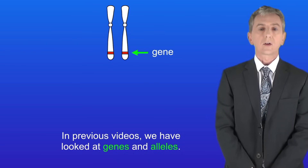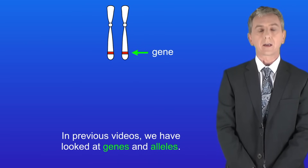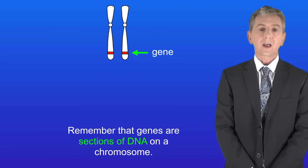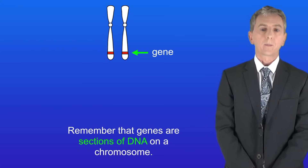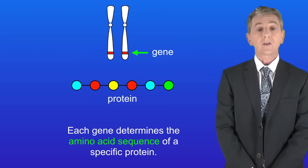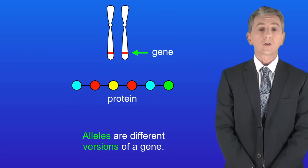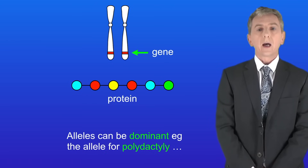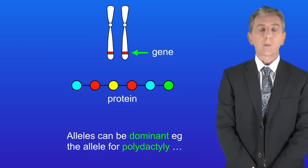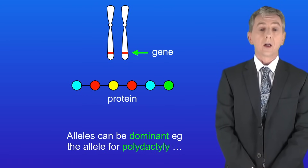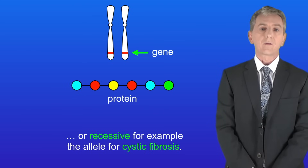In previous videos we've looked at genes and alleles. Remember that genes are sections of DNA on a chromosome and each gene determines the amino acid sequence of a specific protein. Alleles are different versions of a gene. Alleles can be dominant, for example the allele for polydactyly, or recessive, for example the allele for cystic fibrosis.